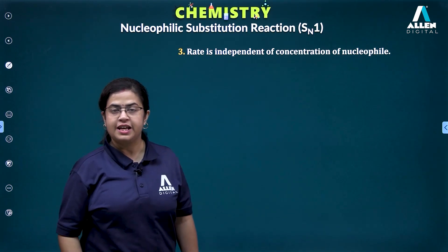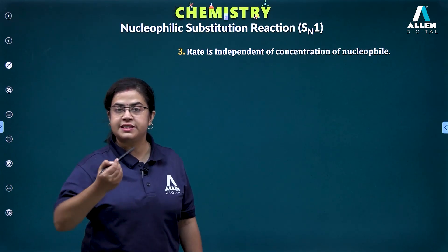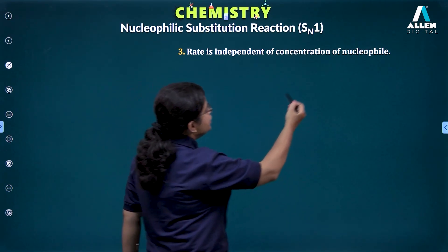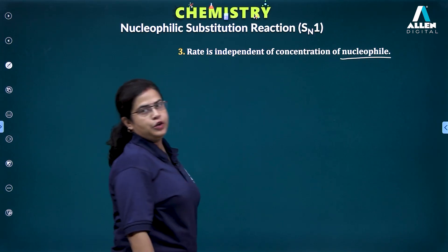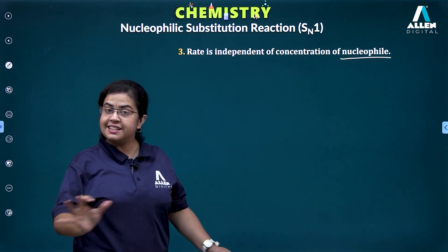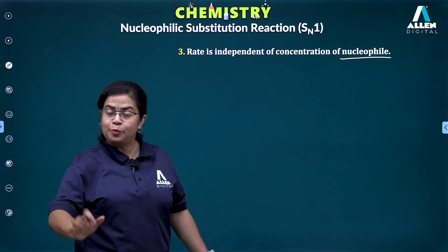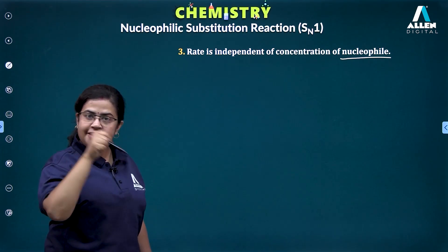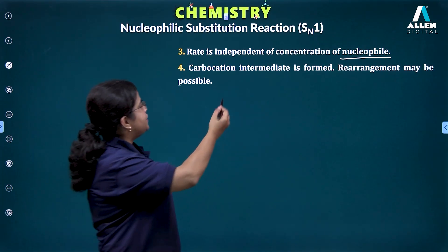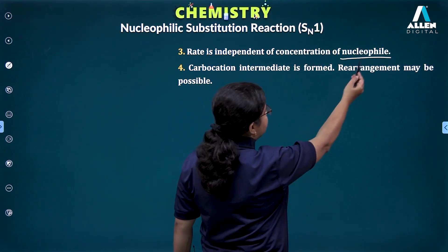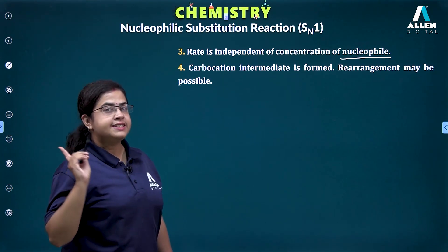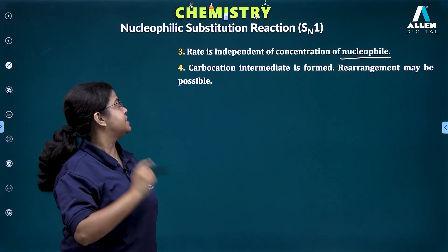Since the rate depends only on the concentration of the substrate or alkyl halide, it is independent of the concentration of the nucleophile. The nucleophile has no role to play in the rate-determining step. Also, the carbocation intermediate formed in the first step can rearrange itself into a more stable carbocation if there is a possibility.